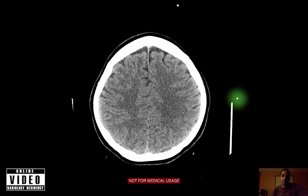Why is excluding hemorrhage so important in the brain? In the ER setting, there are three main indications for a head CT. The most common by far is trauma. If you have trauma to the brain and there's internal hemorrhage, it's definitely something you want to know about because that's going to change management.